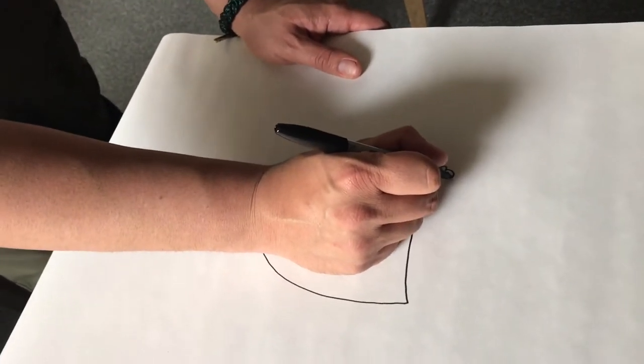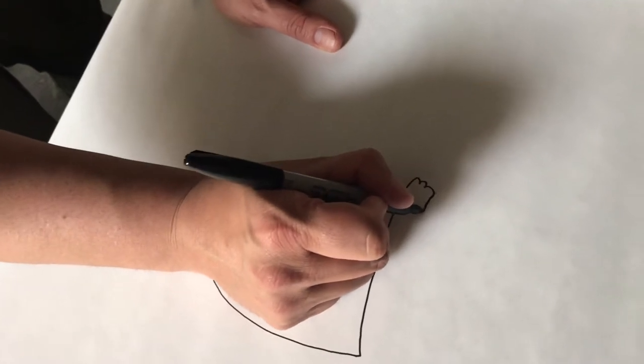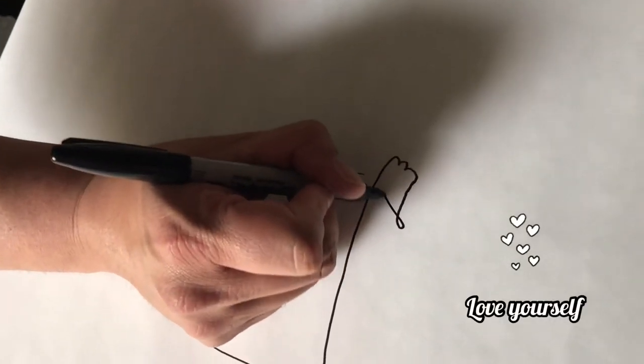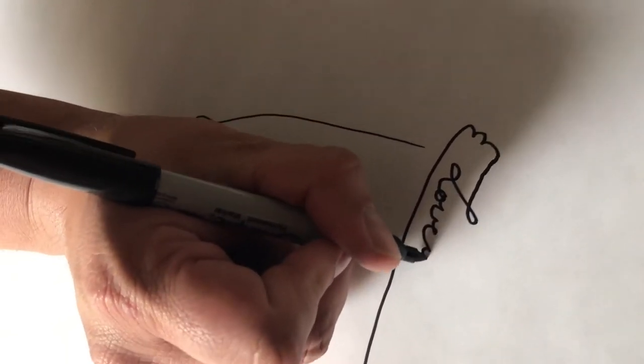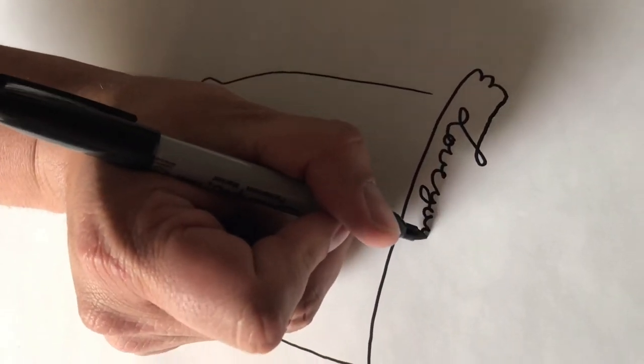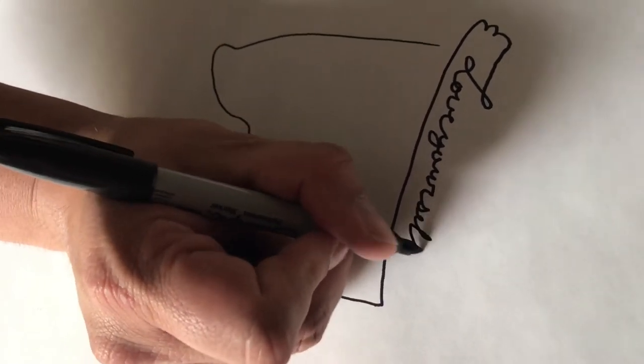If you pick up your pen, you're cheating. So now you're going to come over it. You're going to go over and you're going to create the letters love yourself in cursive.